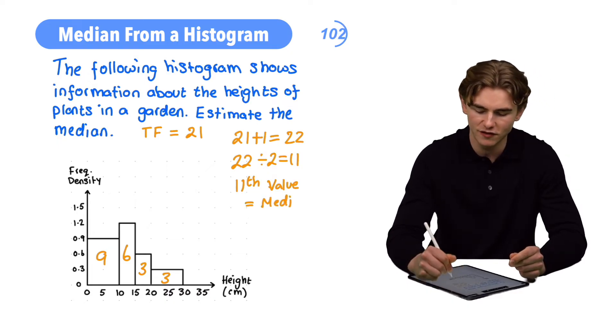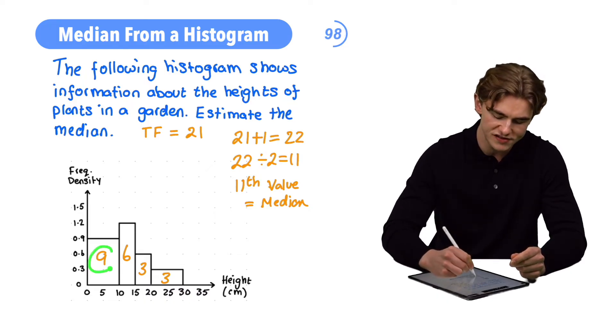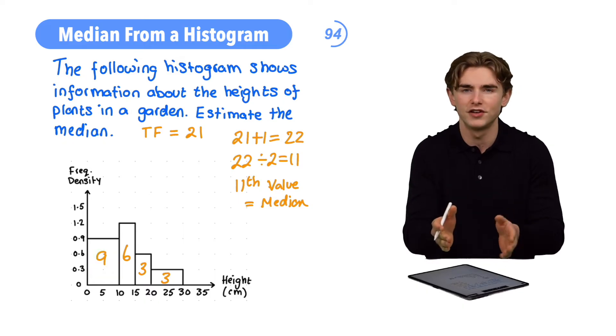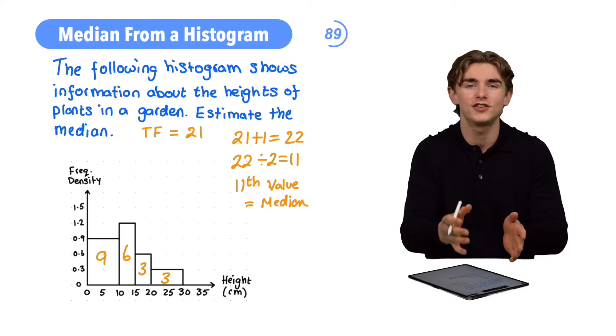Now, how are we going to find an estimate for our 11th value? Well, we know that we have a frequency of 9 represented by our first bar. So that's going to take us up to 9 out of our 11. We need to add 2 more.